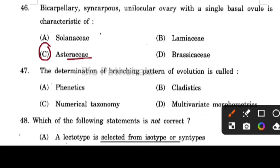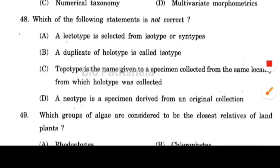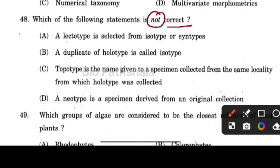Next question: which of the following statement is not correct? The incorrect statement is option number D — a neotype is a specimen derived from an original collection.